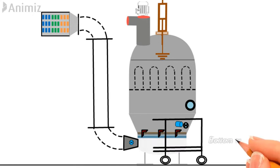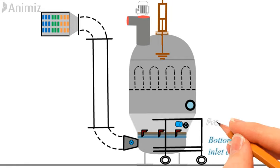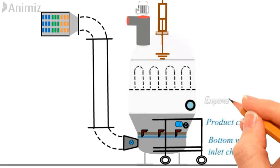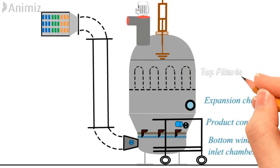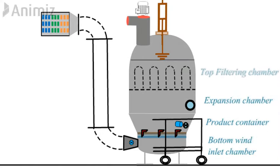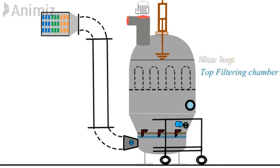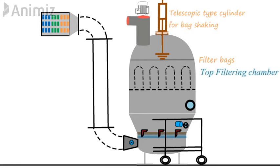The dryer is divided into four main sections. The first is the bottom wind inlet chamber, the second is the product container, the third is the expansion chamber where the drying happens, and the fourth is the top filtering chamber, which consists of filter bags and a telescopic type cylinder for filter bag shaking.